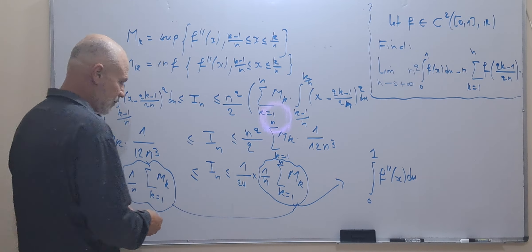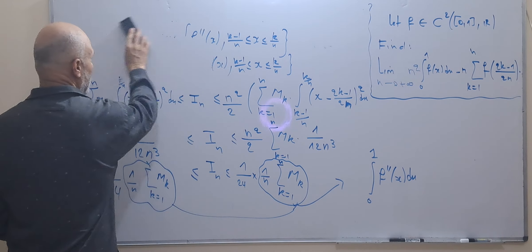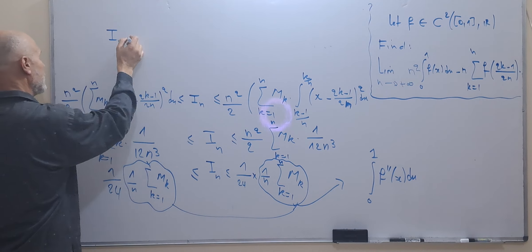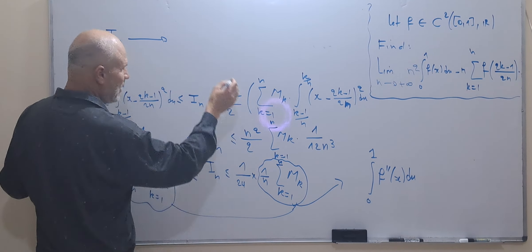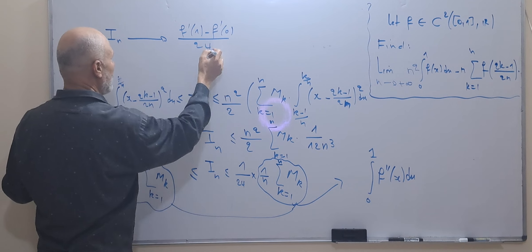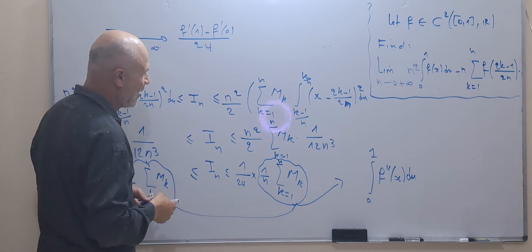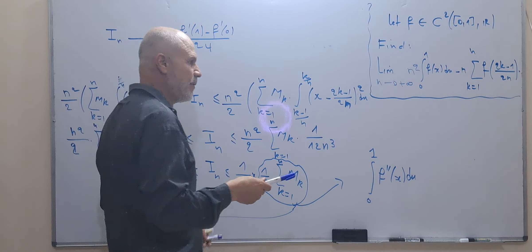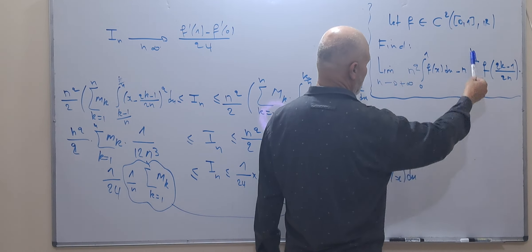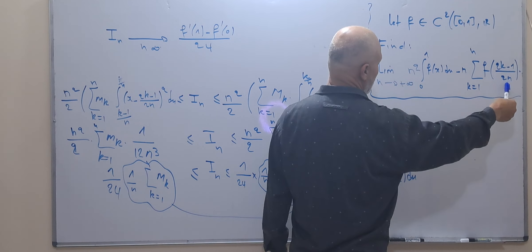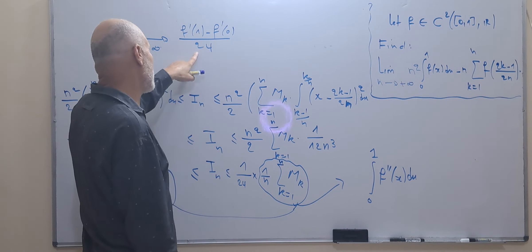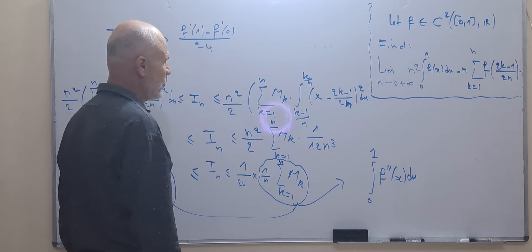By the squeeze theorem, aₙ converges to (1/24) times the integral from 0 to 1 of f''(x) dx, which equals (f'(1) − f'(0))/24, as n goes to plus infinity. Therefore, the limit of n² times the integral from 0 to 1 of f(x) dx, minus n times the sum from k=1 to n of f((2k−1)/2n), equals (f'(1) − f'(0))/24 when n goes to plus infinity.